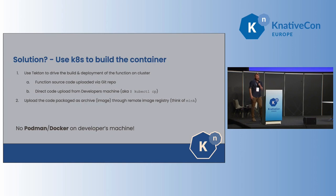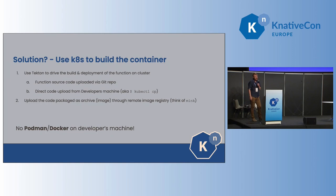Another option might be not to use Tekton at all — we can just package the source code as an image and push it to some container registry. This has been proposed by Mink, for example. But I suppose that the Tekton approach has several benefits, because this way we can easily plug a CI/CD solution into our system. We can have some stability, and we can also cache the built artifacts or even the image layers on the cluster, so the builds are then faster.